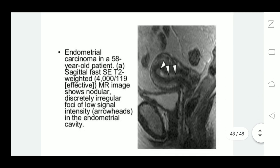This MRI picture shows endometrial carcinoma in a 58-year-old patient. We can see discretely irregular foci of low signal intensity, identified by arrowheads, present in the endometrial cavity — this is the endometrial carcinoma.